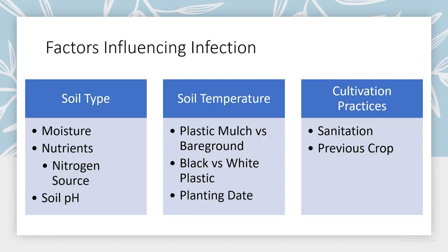Soil temperature is another key factor. A lot of vegetable growers use plastic mulch and plant earlier in the year, so they're dealing with cooler, wetter temperatures conducive to pathogens like Pythium causing damping off. White plastic versus black plastic matters too — we don't use a lot of black plastic in the middle of summer because it gets too hot, stressing plants and stimulating pathogen development.